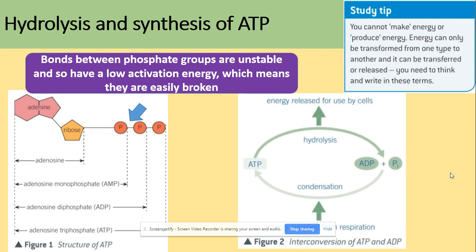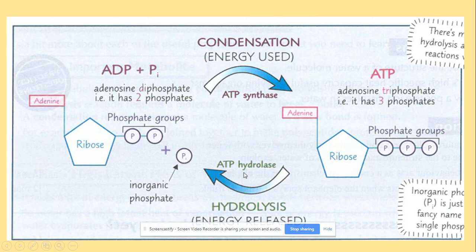For hydrolysis and synthesis of ATP, what we really need to remember is that bonds between phosphate groups are unstable and so have a low activation energy, which means they are easily broken. Looking at the hydrolysis of ATP, it will be hydrolyzed to ADP and inorganic phosphate. A condensation reaction then joins ADP with inorganic phosphate to give us ATP again. Make sure you are aware of these two reactions.